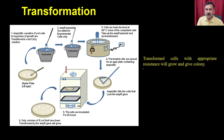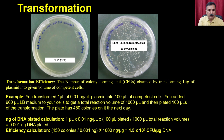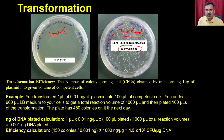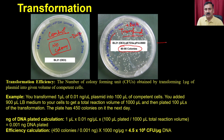Transformed cells with the appropriate resistance will grow and give you colonies. This is how the bacterial plates look after transformation — the untransformed control plate has no colonies, while the transformed plate shows 80 to 90 colonies. The control plate without DNA has no growth, whereas the plate with DNA shows robust colony formation. Using the number of colonies obtained, you can calculate the transformation efficiency.